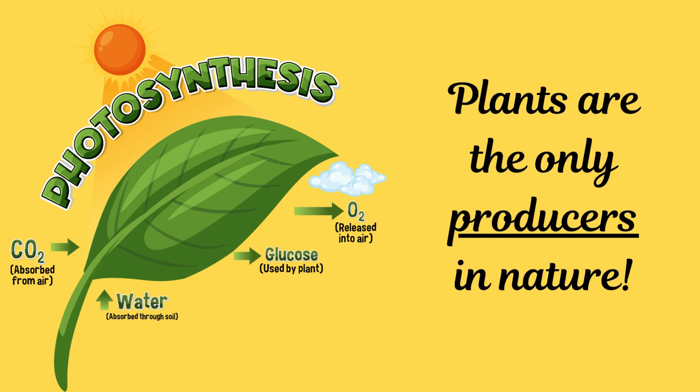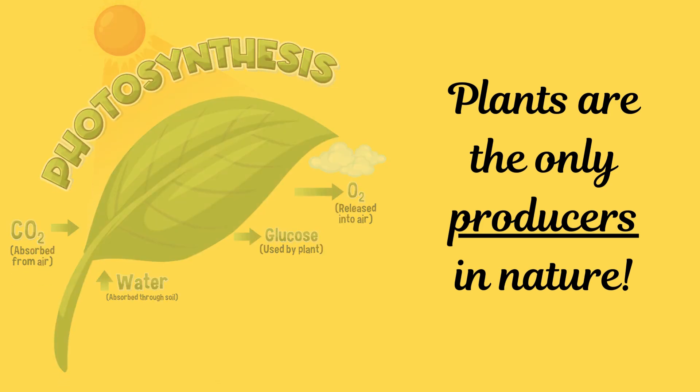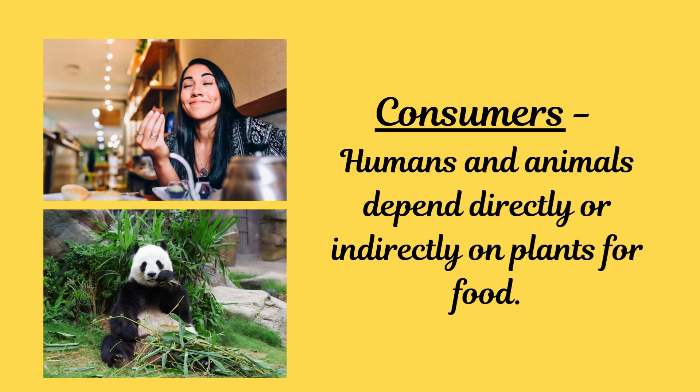Producers are of course the plants, because they are the only living thing which can produce their own food without depending on anyone else directly. The plant needs air, sunlight, water, and minerals from the soil, and it is able to make its own food through the process of photosynthesis. So plants are the producers.